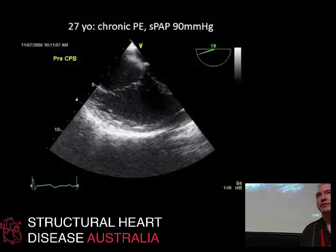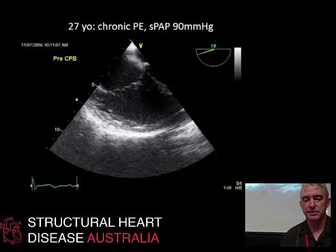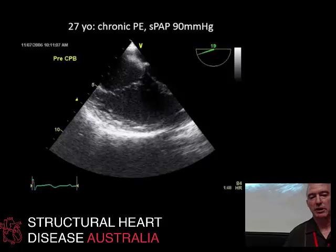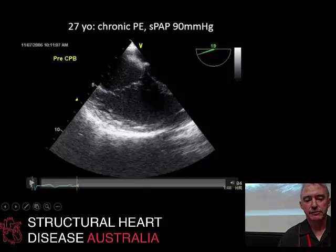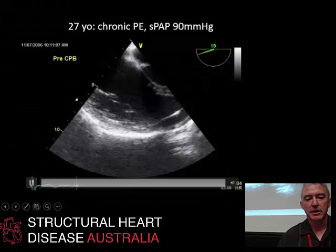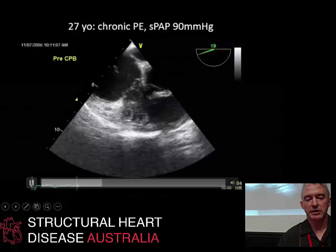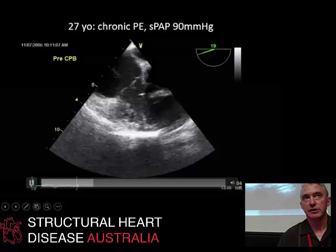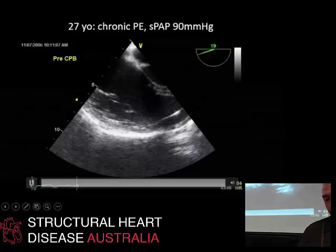I want to show you a few echoes to demonstrate how the RV can respond during this cycle of haemodynamic deterioration. This is a 27-year-old patient undergoing a pulmonary thromboendarterectomy for chronic thromboembolic pulmonary hypertension. He had very impressive pulmonary pressures, but his right ventricle was coping very well — a nice systolic excursion on the TAPSE. The RV is dilated, but it's contracting very well, so he is very well adapted to this severe pulmonary hypertension.